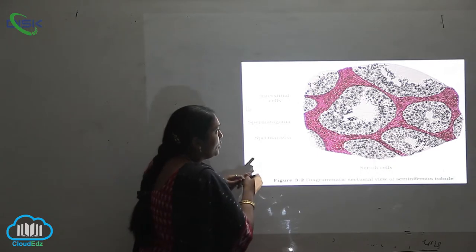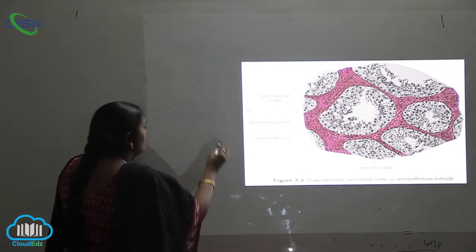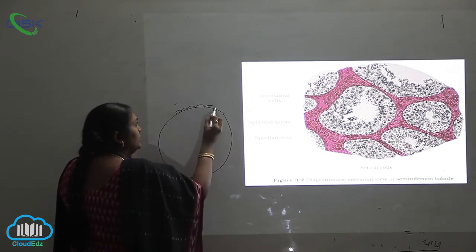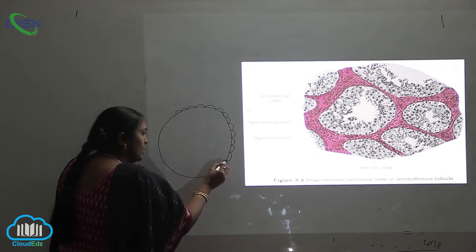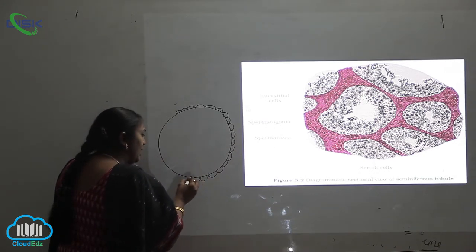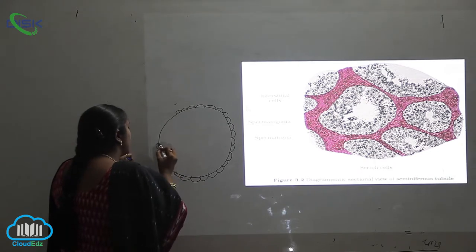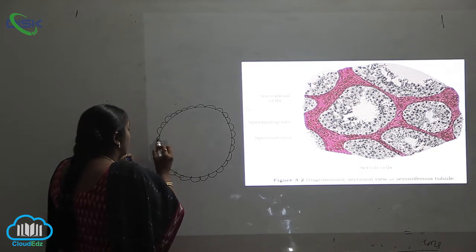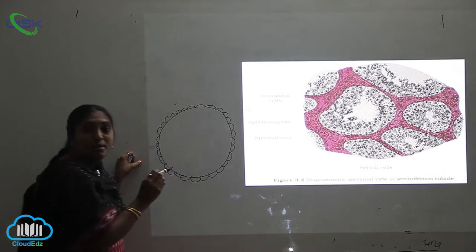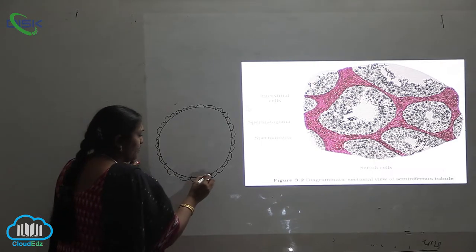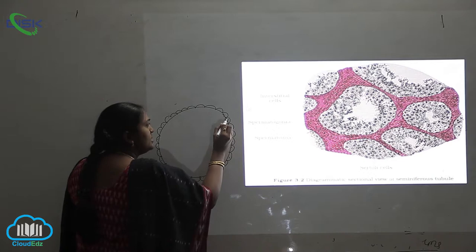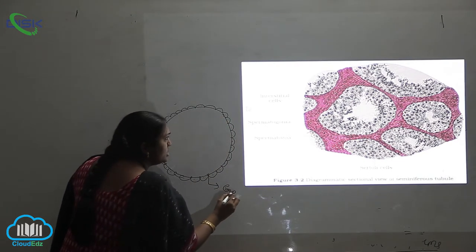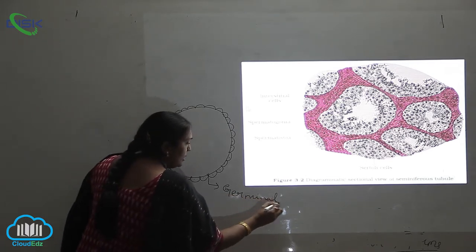When you see here, the outermost layer of the seminiferous tubule is having a lining. The cells are completely forming a chain-like structure and these cells are called as the germinal epithelium, very very important. What is this germinal epithelium? See, this is called as the germinal epithelium.